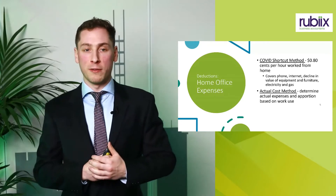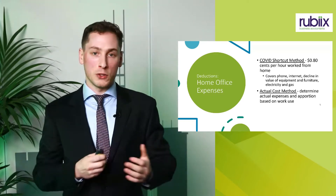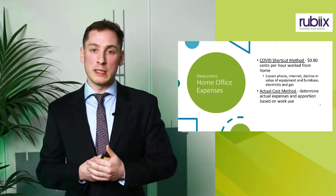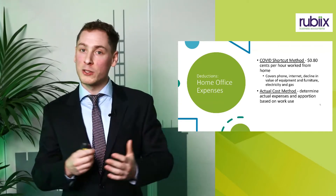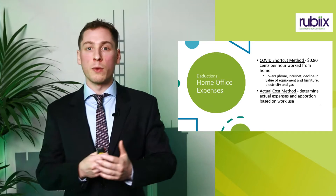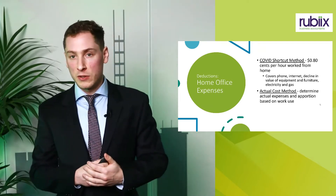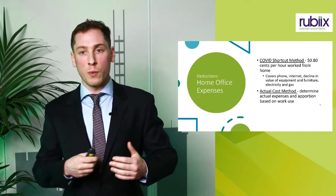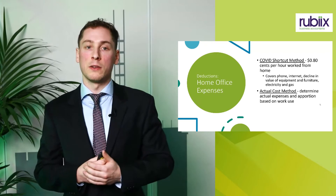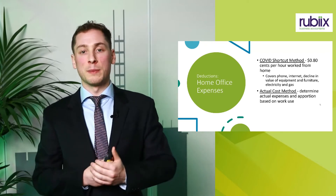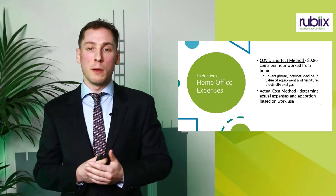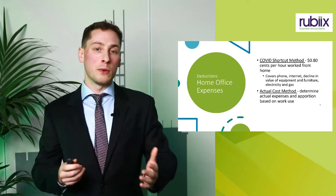Next is a hot topic: home office expenditure. There are three main methods, and I'm going to touch on two of them. The first is the COVID shortcut method. This is the first full financial year that we've gone through under COVID-19, and most of you would have been working from home, so this is definitely relevant. The COVID shortcut method allows you to claim $0.80 per hour worked from home — a quick way to calculate your home office deduction. This method covers phone, internet, decline in value of equipment and furniture, and electricity and gas. If you wanted to claim those expenditures separately, you wouldn't be able to under this method.